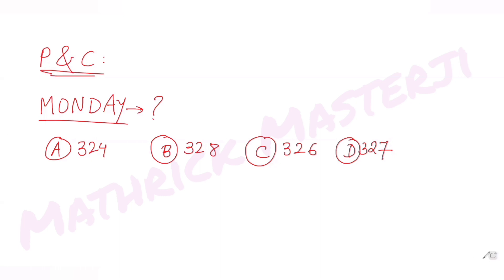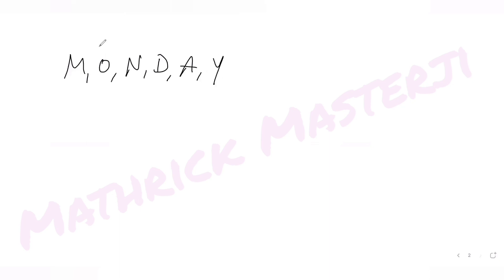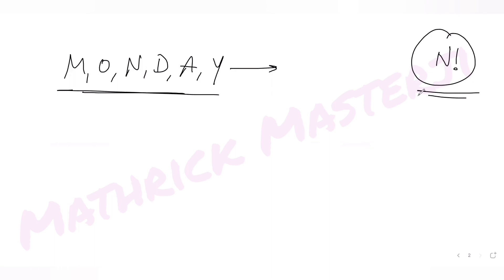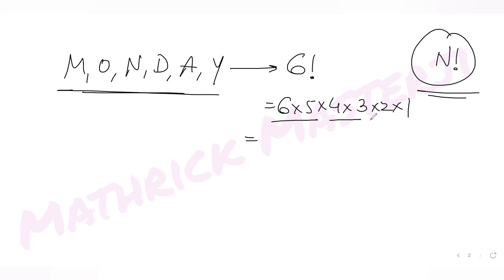MONDAY consists of six different letters. When we arrange n letters in a straight line, they can be arranged in n factorial ways. So arranging six letters gives 6! = 6 × 5 × 4 × 3 × 2 × 1 = 720 words total. Out of these 720 words, we need to find the rank of the word MONDAY when all letters are arranged in dictionary order.